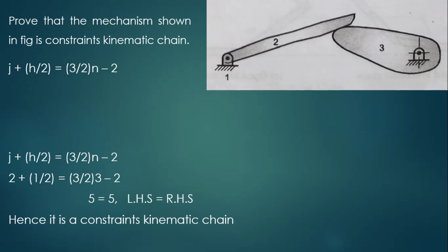Another example with 3 links and a higher pair: link 2 and link 3 contact at a point, so h = 1. Link 2 is joined to link 1 (joint 1) and link 3 is joined to link 1 (joint 2), giving j = 2. Substituting n = 3, h = 1, j = 2 into Equation 3 gives 5 = 5 (LHS = RHS), confirming the given kinematic chain is a constrained kinematic chain.